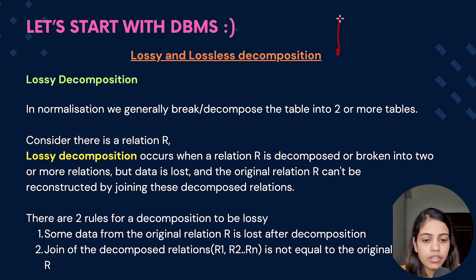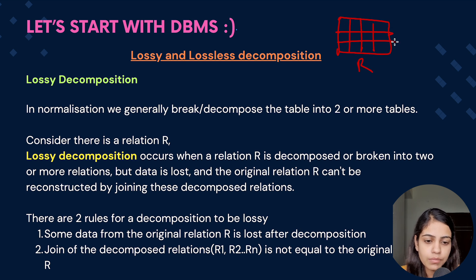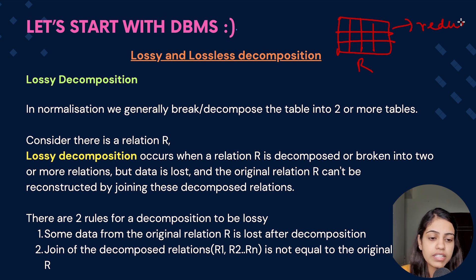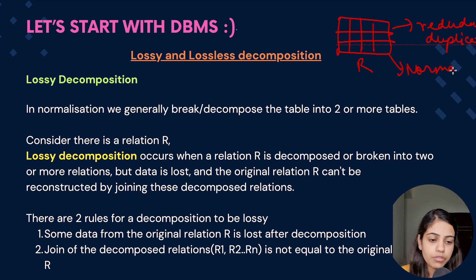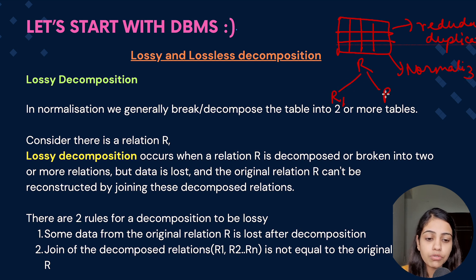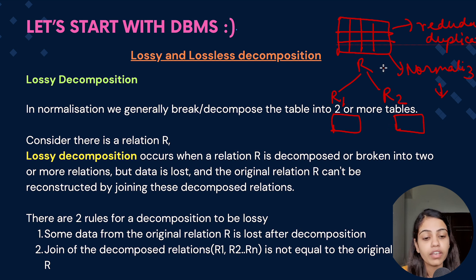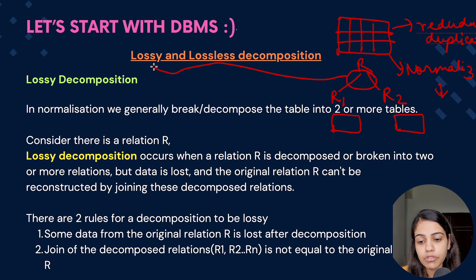Let's revise some older concepts and then switch to decomposition. Consider there is a relation R with some rows, columns, and data. If there is data redundancy or data duplicacy present in this relation, what we do in normalization is we break or decompose the given relation into two or more sub-relations so that the data redundancy is decreased. We have broken it into R1 and R2, and this decomposition can be of two types: lossy decomposition and lossless decomposition.